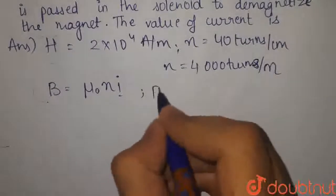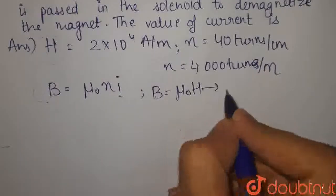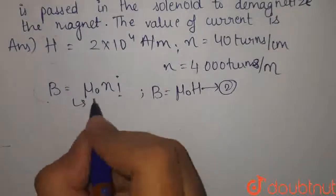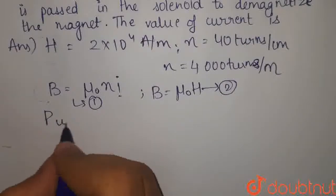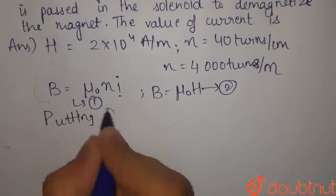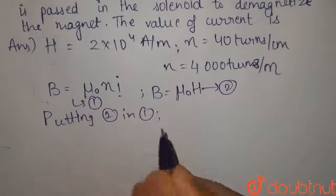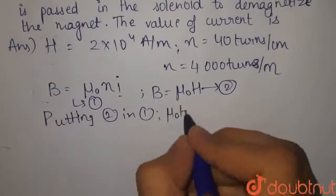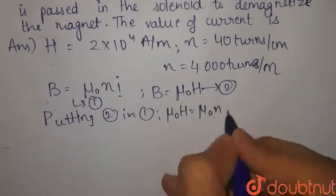That is, B is equals to mu 0, H. तो हम इस equation को यहां रख देते हैं. So, putting 2 in 1. We get mu 0, H is equals to mu 0, ni.